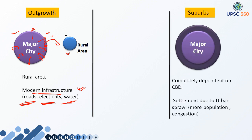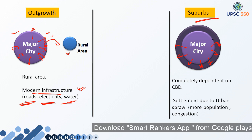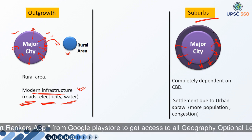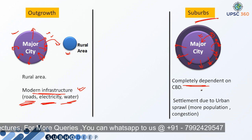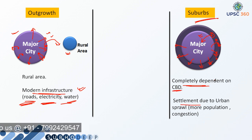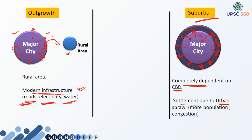Now let us see suburbs. When there is outgrowth into a nearby area that was earlier rural, that region turns out to be a suburb region. Remember, this suburb region is completely dependent on the major city's central business district. The settlement that happens in the suburb region occurs due to urban sprawl — because with increasing population and urbanization, urban people try to settle in regions where they get cheaper land. That is what urban sprawl is, and more and more population and congestion are observed in these regions.